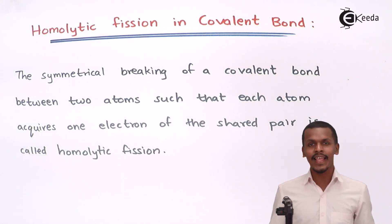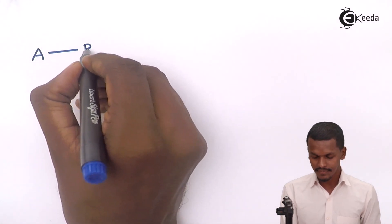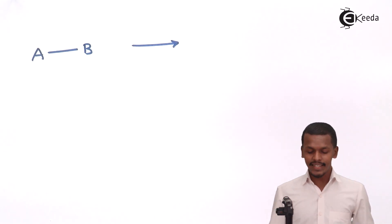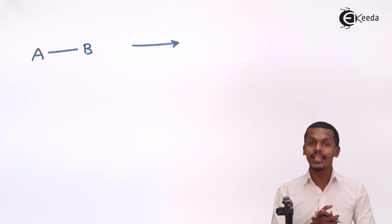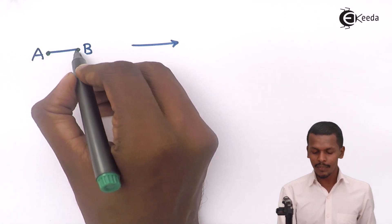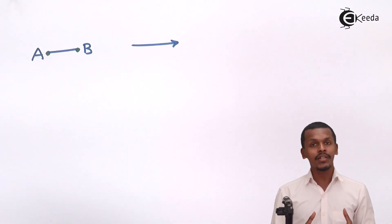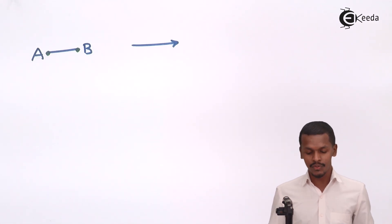Let me give an example to make homolytic fission clear. Suppose we have a reactant A–B. The two electrons in this bond are equally shared by atom A and atom B, which is why a covalent bond is formed between them.